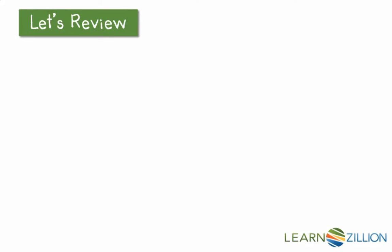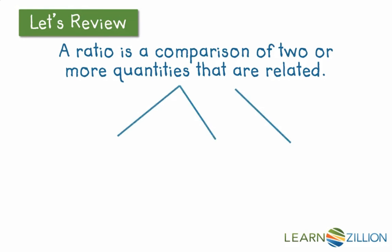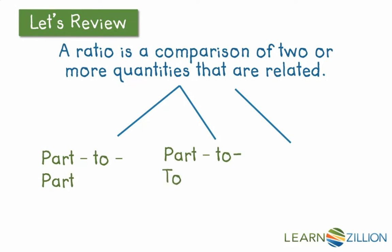Let's start by reviewing the definition. A ratio is a comparison between two or more quantities that are related. You may also remember that ratios can be three different types of comparisons: they can compare a part to another part, a part to a total, or rates.